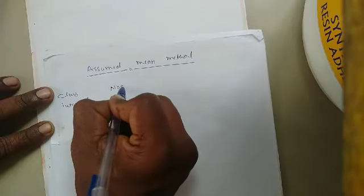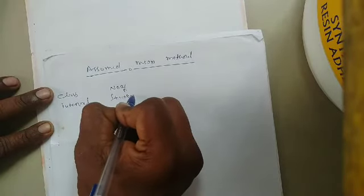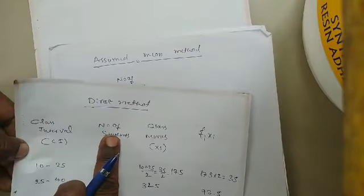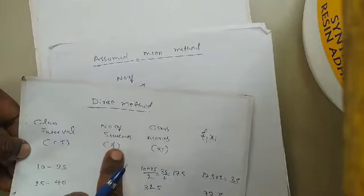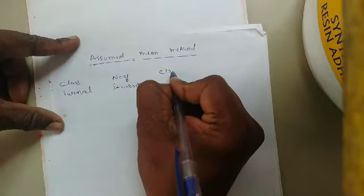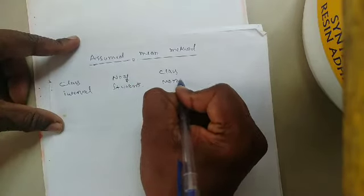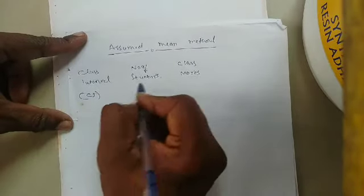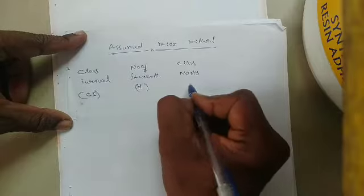We have the columns: class interval (CI), number of students (fᵢ), and class marks (xᵢ). I am following the same steps as in the direct method.